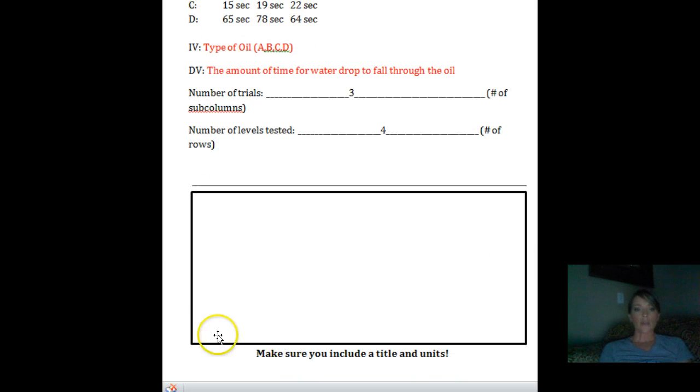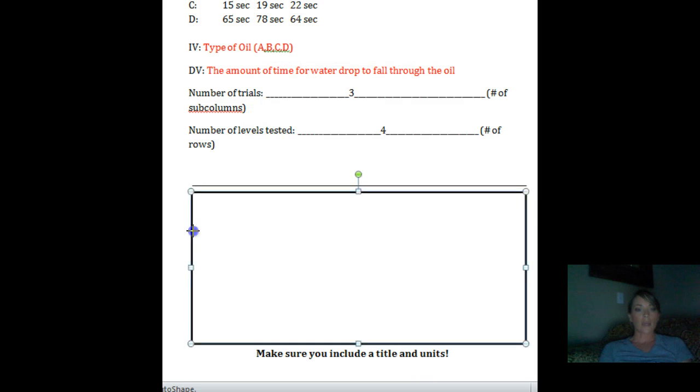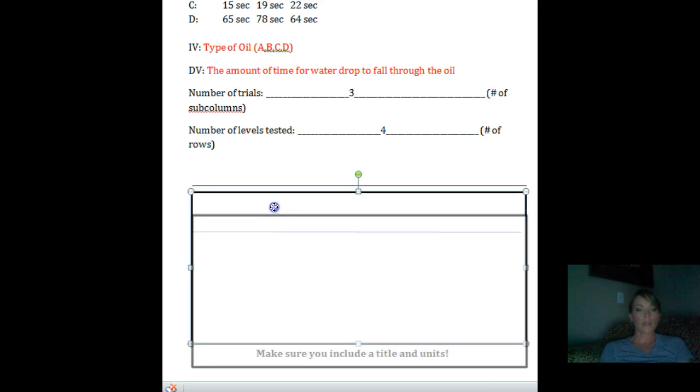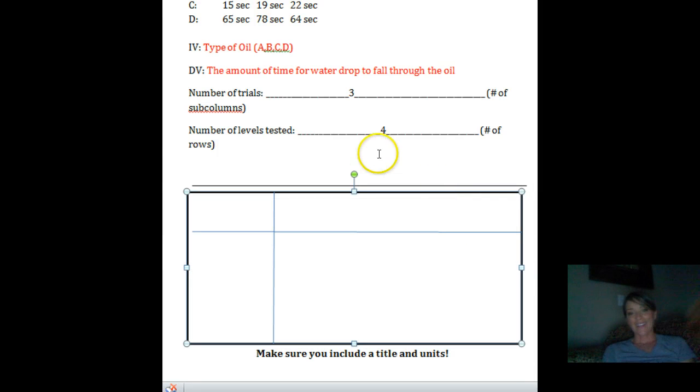So the first thing I need to do is I'm going to have to draw in my lines. So always make a row for your heading. And then we learned yesterday from our screencast that we're going to make, oops, don't want that. I'm making a video. It's just a practice one, so it's okay. I'm going to make a column for my independent variable, a column for my summary, summarizing data. And those are both going to be smaller than the middle, because the middle has to be subdivided into the number of trials.